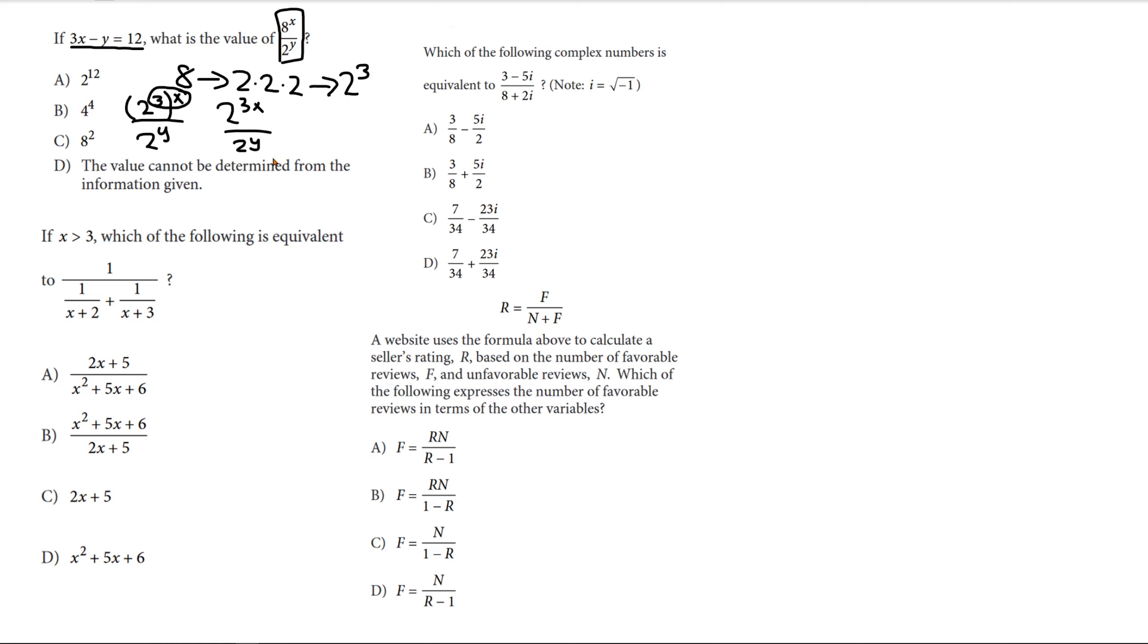And now, with a fraction, what we do is subtract the exponents, assuming that they have a common base, which we do. So, 2 to the 3x minus y. And now, this is where we use the 3x minus y. 3x minus y is defined as equal to 12. And now, we have the answer as 2 to the 12th power, or A.